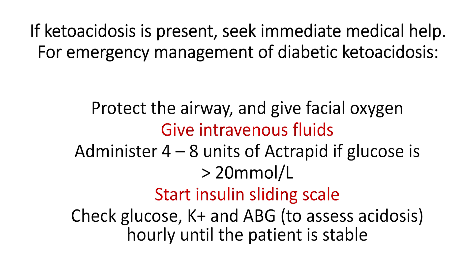For emergency management of diabetic ketoacidosis, protect the airway and give facial oxygen, give intravenous fluids, administer 4 to 8 units of Actrapid if glucose is more than 20 millimoles per litre, and start an insulin sliding scale. Check glucose, potassium, and arterial blood gases hourly until the patient is stable.